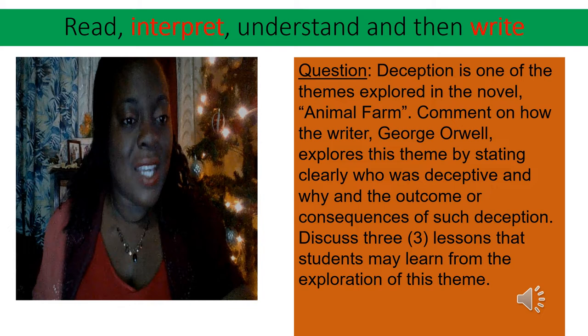In this question given on the novel Animal Farm, the question reads: Deception is one of the themes explored in the novel Animal Farm. Comment on how the writer George Orwell explores this theme by stating clearly who was deceptive and why, and the outcome or consequence of such deception. Discuss three lessons that students may learn from the exploration of this theme. Having read the question, you would see that there are several things required of the students. Can you identify the three things?